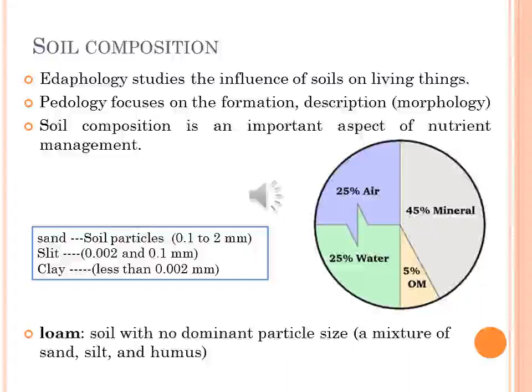The basic components of soil are minerals, organic material, water, and air. A typical soil consists of 45% inorganic material, 5% organic material, 20–30% water, and 20–30% air. These percentages are only generalizations. In reality, soil is very complex and dynamic; its composition can fluctuate on a daily basis depending on numerous factors such as water supply, cultivation practices, or soil type.